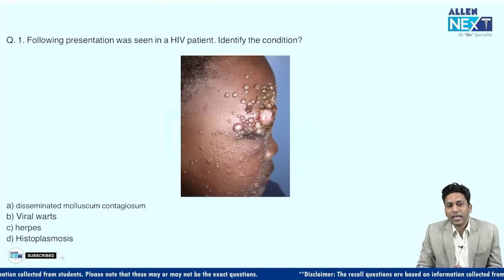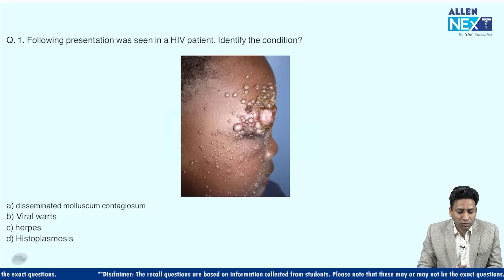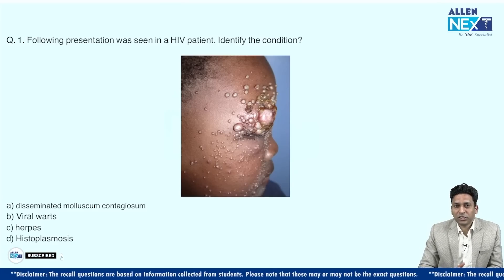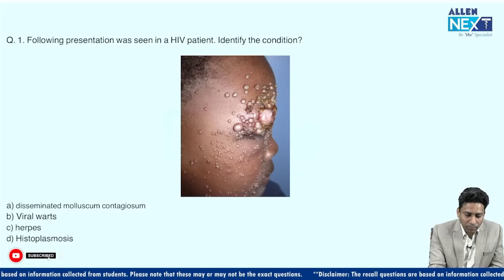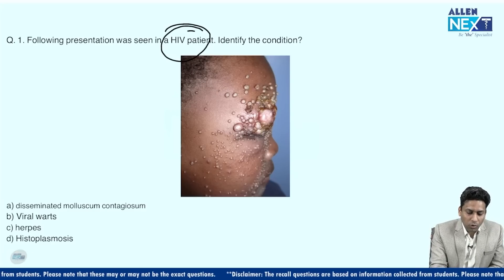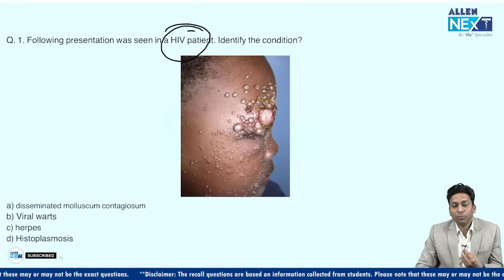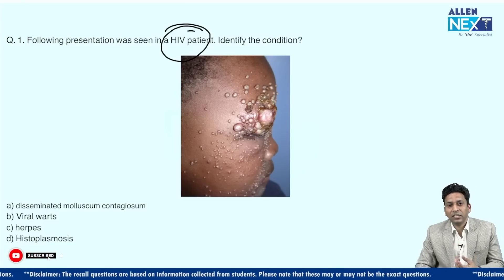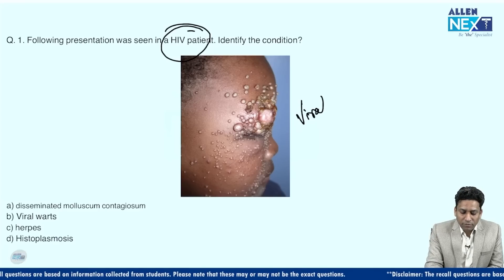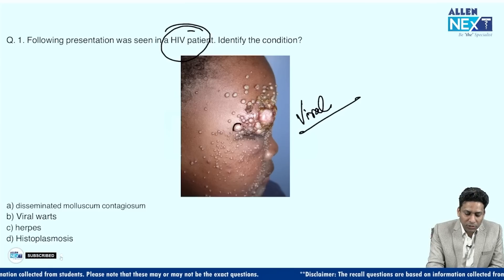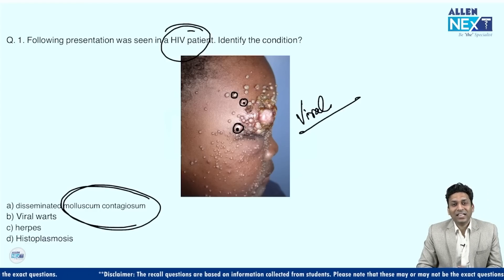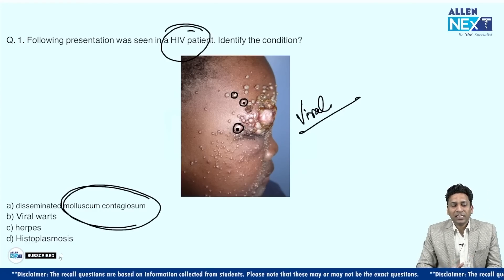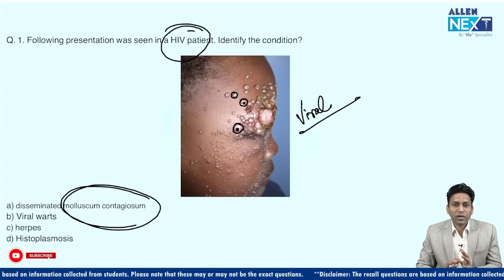Students said that one image came showing multiple small papular lesions, some of them very large, and in the question it was written that the patient presented with such a presentation and was suffering from HIV. This is an immunocompromised condition, predisposing to various infections. There is one viral condition which presents with papular lesions with central umbilication — molluscum contagiosum. In immunocompromised cases like HIV patients, lesions can be disseminated, large in size, more in number, and present over atypical sites.